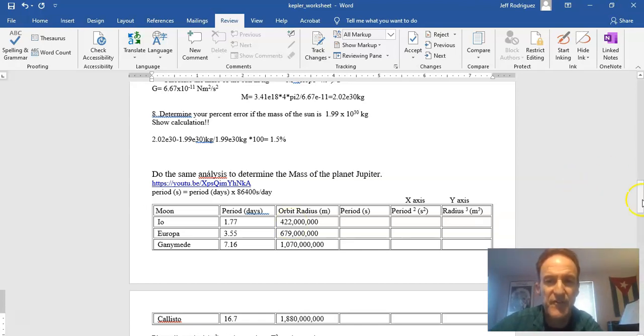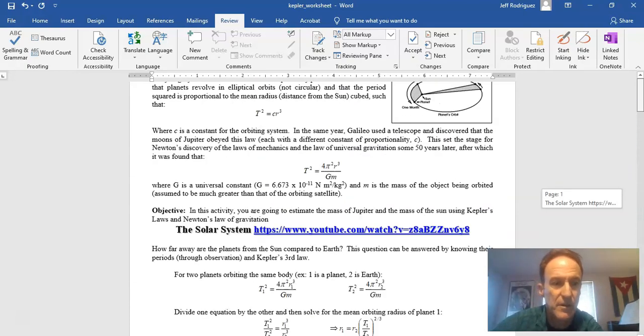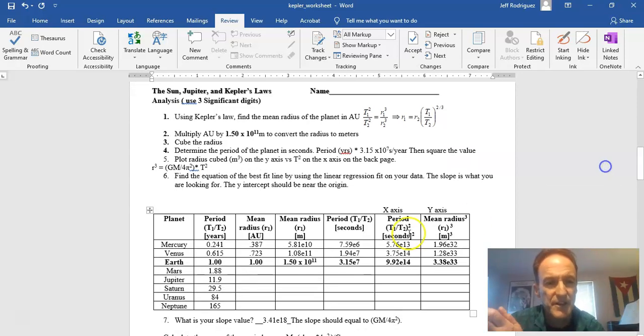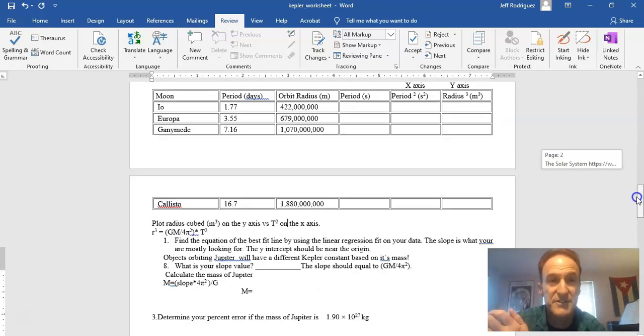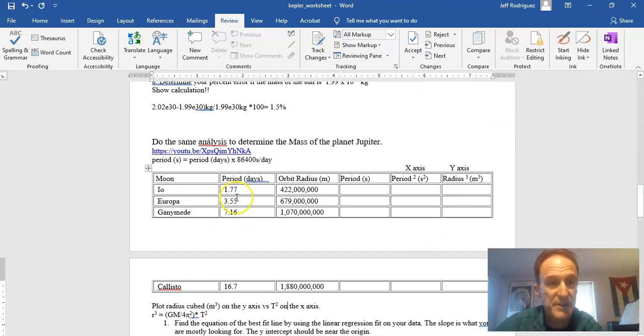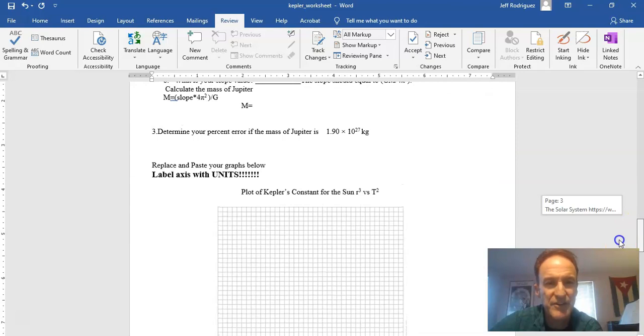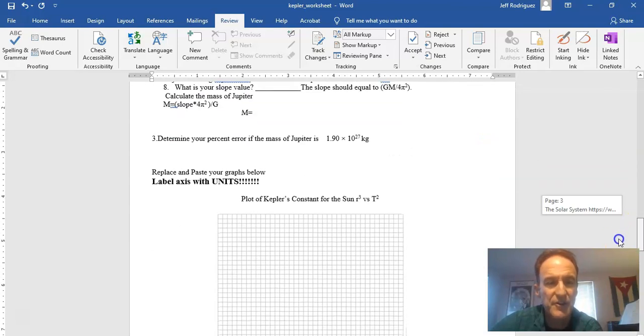The steps are going to be very similar to what you just did. These six steps, taking the period. But instead of being in years, here it's in days. So be careful. Everything's not exactly the same. And I've given you the orbital radius rather than making you calculate it. That's a little bit more complicated. And you should be able to paste your graphs in these regions. So this asks for the plot of the constant versus the sun.